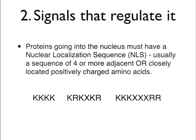Proteins going through the nuclear pore complex must have specific sequences allowing passage. Proteins going into the nucleus must have a nuclear localization signal, also known as nuclear localization sequence or NLS. That nuclear localization signal is usually a sequence of four or more adjacent or closely located positively charged amino acids, and three representative sequences are shown where X represents any given amino acid.